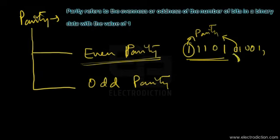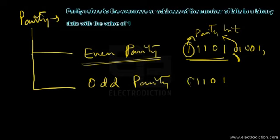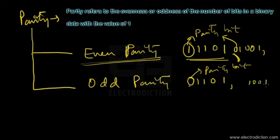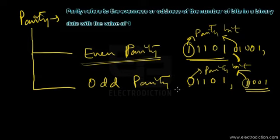In the even parity system, the parity generator attaches a zero bit at the beginning as the parity bit when ones are already even. In the odd parity system, if we have one one zero one, the odd parity generator attaches a zero parity bit so the total number of ones including the parity bit remains odd. If the count of ones is even, the odd parity generator attaches a one as the parity bit.